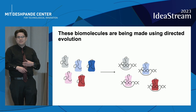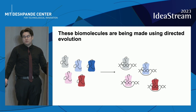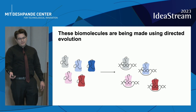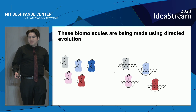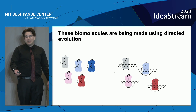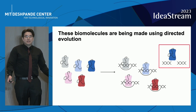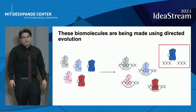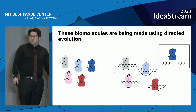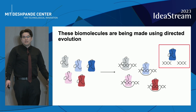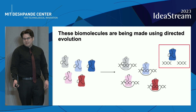We can then test these millions of variants for the medicinal activity that we're looking for. In this example, we can identify a version that makes a cut. Directed evolution is a very powerful tool that has allowed for the development of many useful and efficacious medicines.